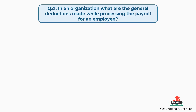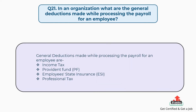Question number twenty-one: In an organization, what are the general deductions made while processing the payroll for an employee? The answer is, general deductions made while processing payroll for an employee are: Income Tax, Provident Fund (PF), Employee State Insurance (ESI), and Professional Tax.